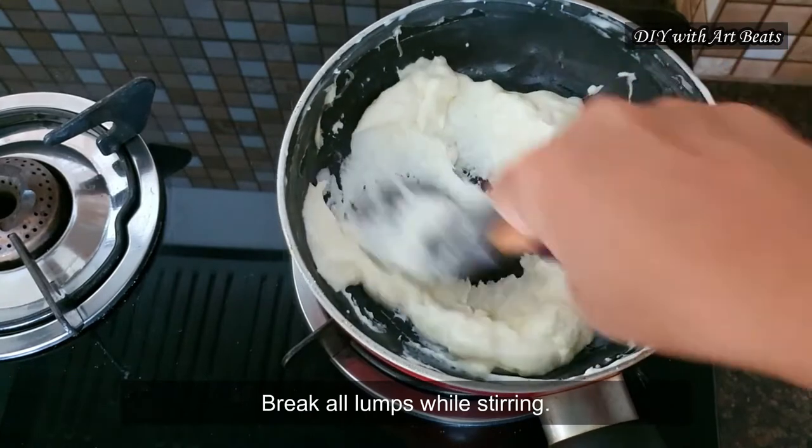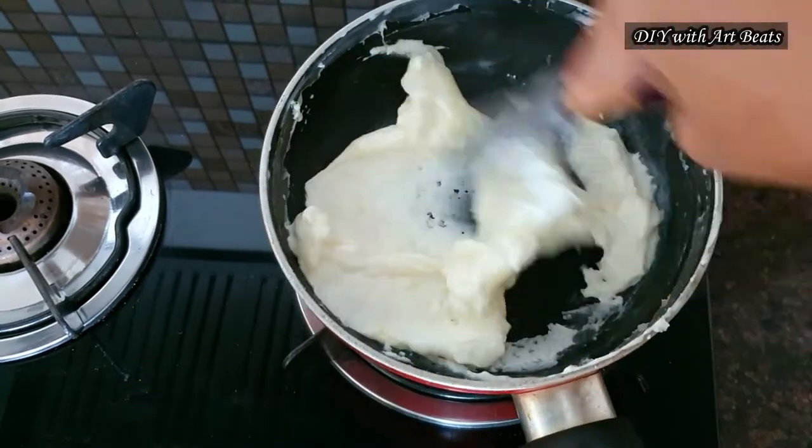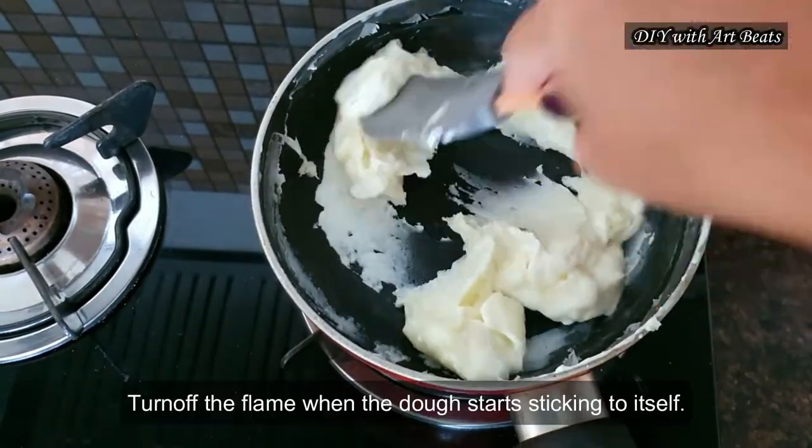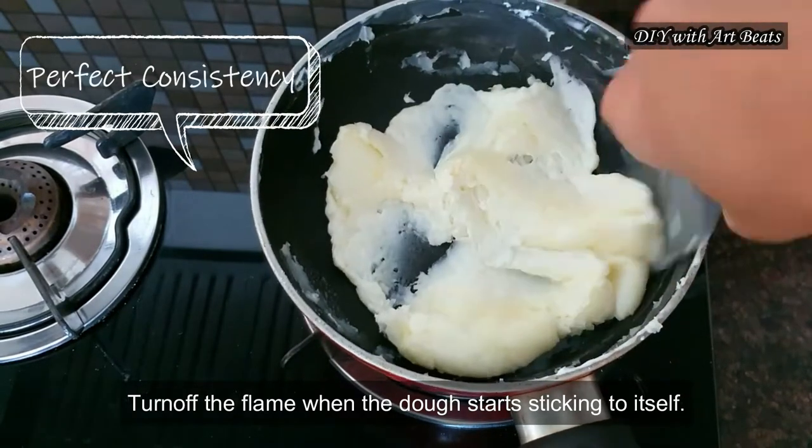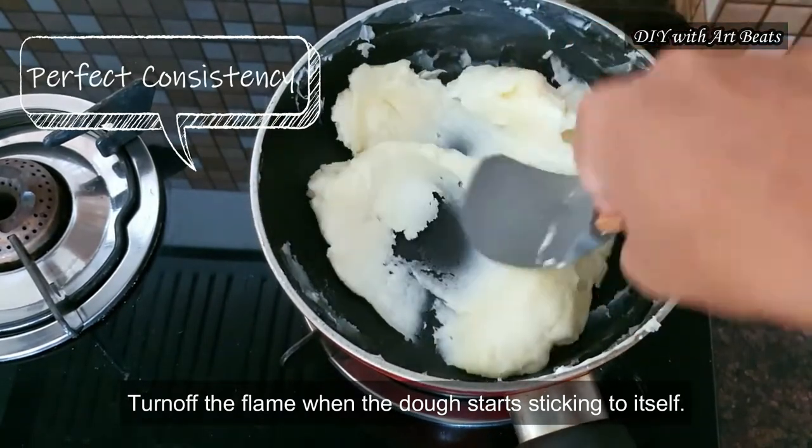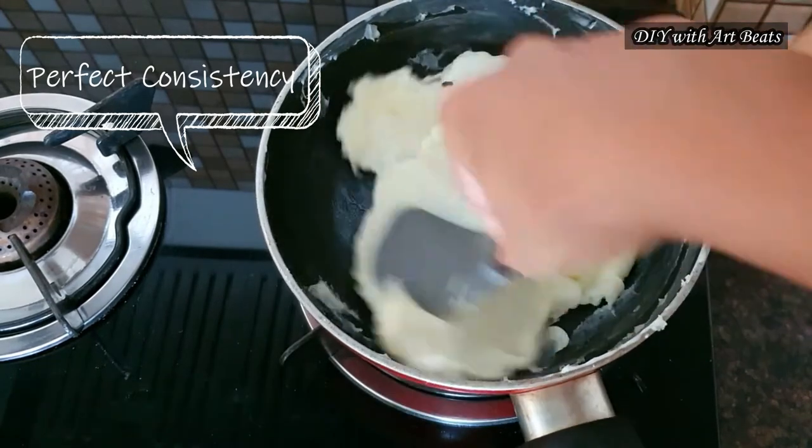Now you can see it starts thickening. Cook till the mixture stops sticking to the pan and leaving the sides. At this stage we will turn off the flame.